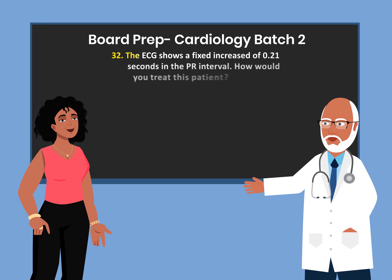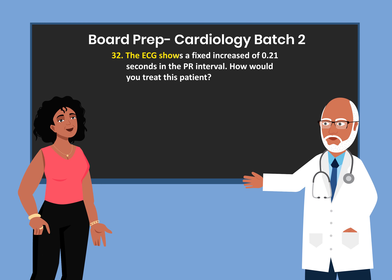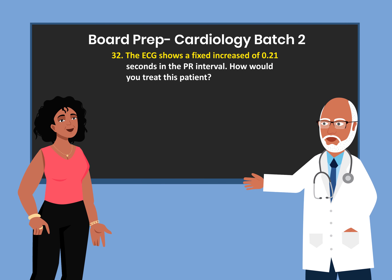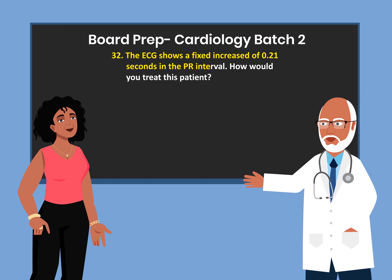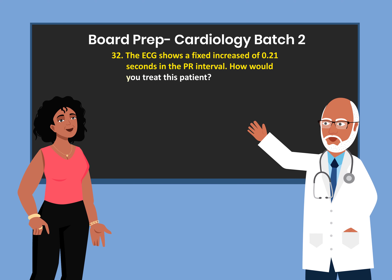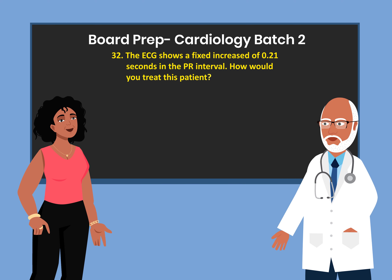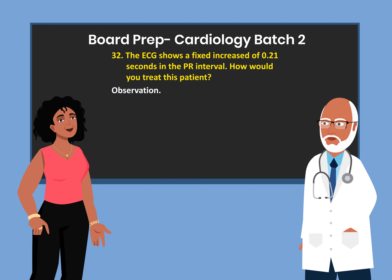The ECG shows a fixed increase of 0.21 seconds in the PR interval. How would you treat this patient? Observation.